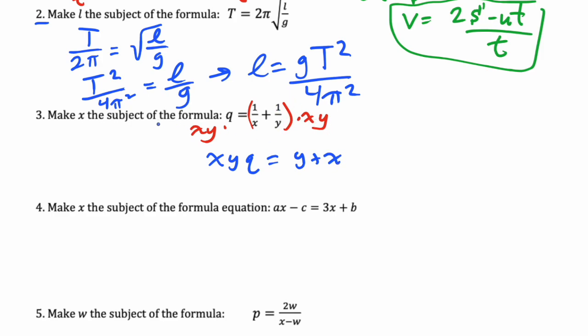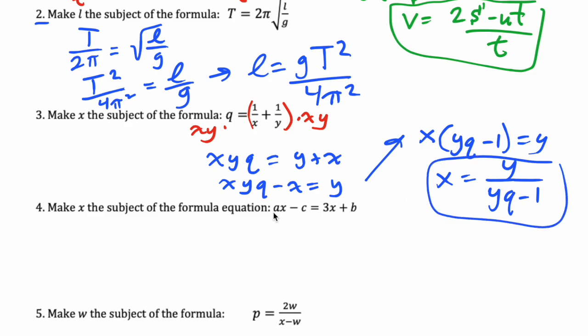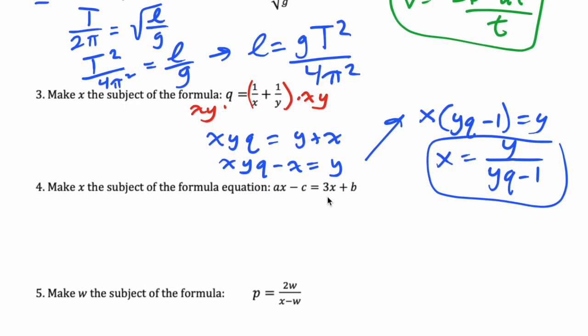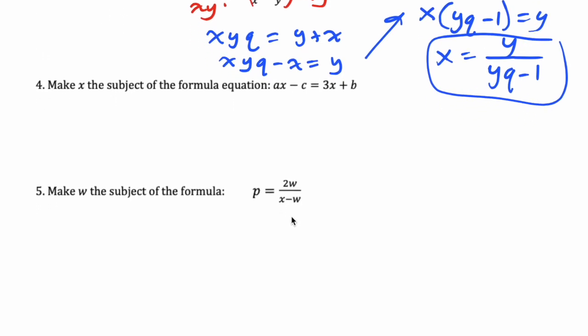The question says solve for x. Now when you have two terms with x in it we need to get them on the same side and factorize, so we have xyq minus x equals y. And then we can factor out the x: x(yq - 1) equals y, so x equals y over (yq - 1). And you do the same thing here, get the x's on one side and factorize out the x, and this one here is also very similar.